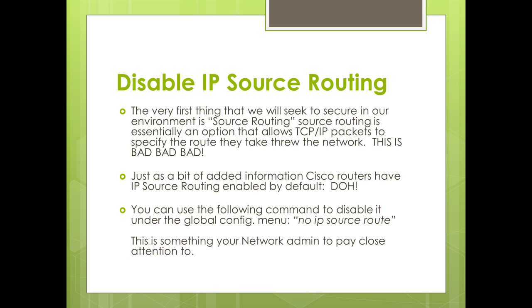Source routing is actually enabled by default on Cisco devices. If you want to disable source routing on your Cisco devices, go to the global config menu — config T for those familiar with Cisco devices — and execute the 'no IP source route' command. This will disable IP source routing. This is something that server admins and network admins should really pay specific attention to. If there is not an application on your network that is using source routing, you should turn it off. Try this in a lab environment, simulate some traffic, and see what impact disabling source routing has on your environment. If you can live without it, turn it off.